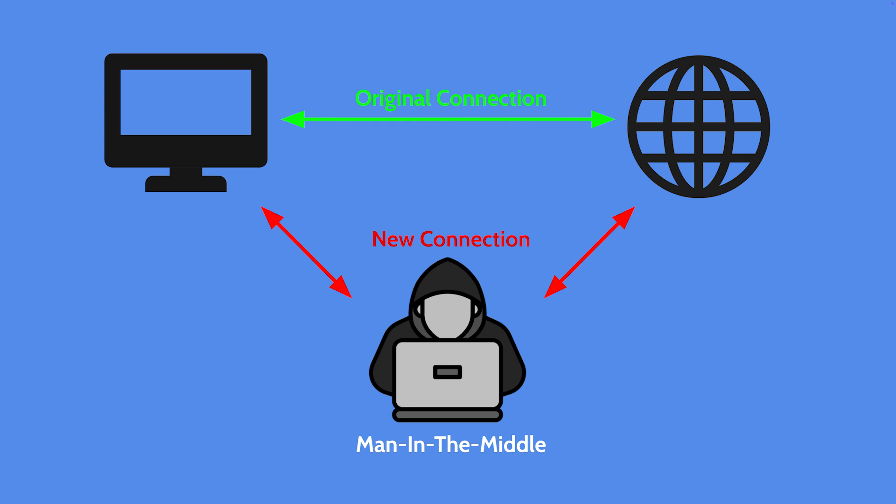So what happens during a man-in-the-middle attack? A hacker secretly intercepts the data being exchanged between two devices. This lets them see, steal, or even modify sensitive information like passwords, credit card details, and private messages. This allows hackers to gain access to data being transmitted at the moment and potentially gain access to data stored on the devices involved — not just the data you're sharing in that moment, but any data you have on your device.